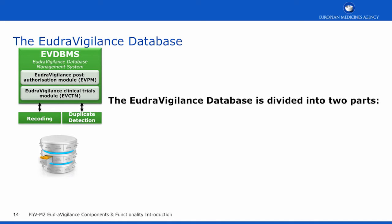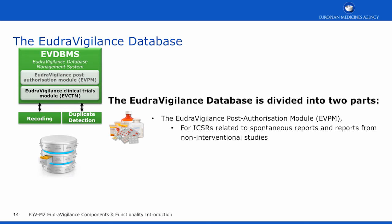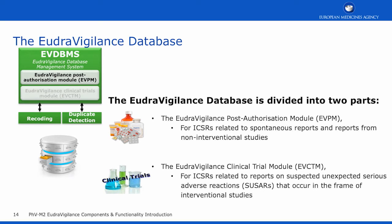The next main component is the EudraVigilance database itself. The EudraVigilance database is divided into two parts: the EudraVigilance post-authorisation module (EVPM), which is for ICSRs relating to spontaneous reports and for reports from non-interventional studies; and the EudraVigilance clinical trial module (EVCTM), which is for ICSRs related to reports of suspected, unexpected, serious adverse reactions that occur in the frame of interventional studies.